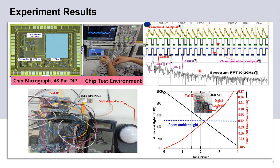This is the frequency spectrum of the received PPG signal. This is the ambient light test environment, in which we decrease the intensity from 1000 lux to 0, and our circuit automatically increases the bias current across the OLED driver to increase the intensity automatically.